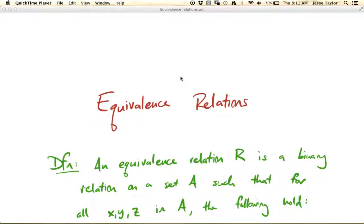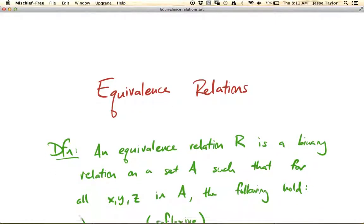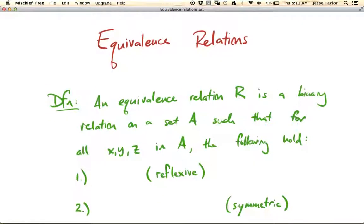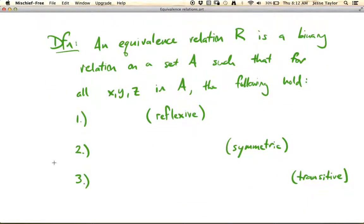This video is about equivalence relations, so first let's talk about what the definition is. An equivalence relation R is a binary relation, so that just means it's comparing two things. Binary means two. So it compares two things on some set A, we're going to call our set A.